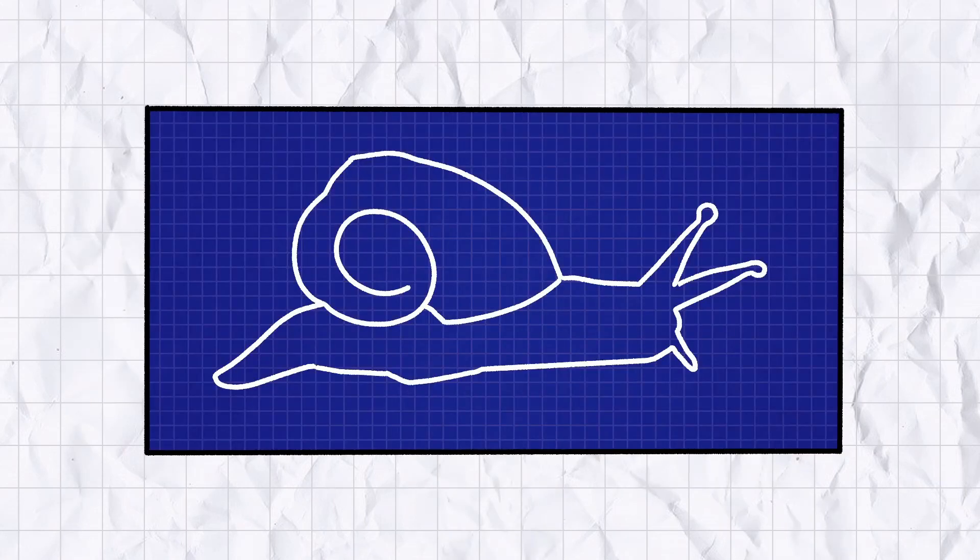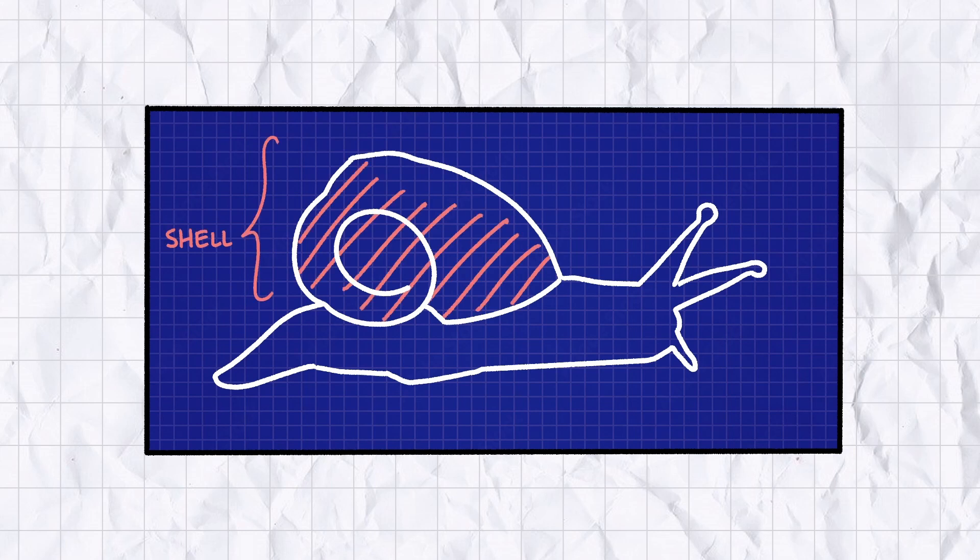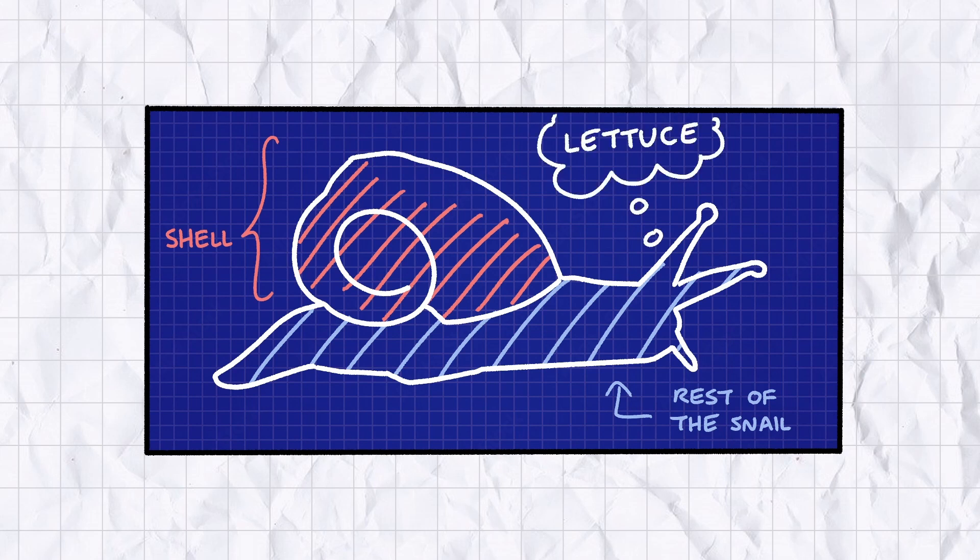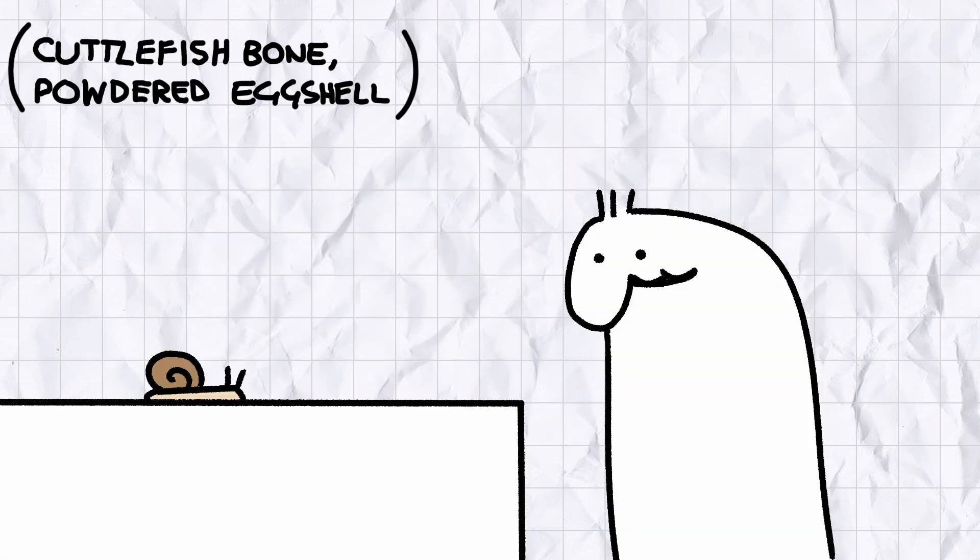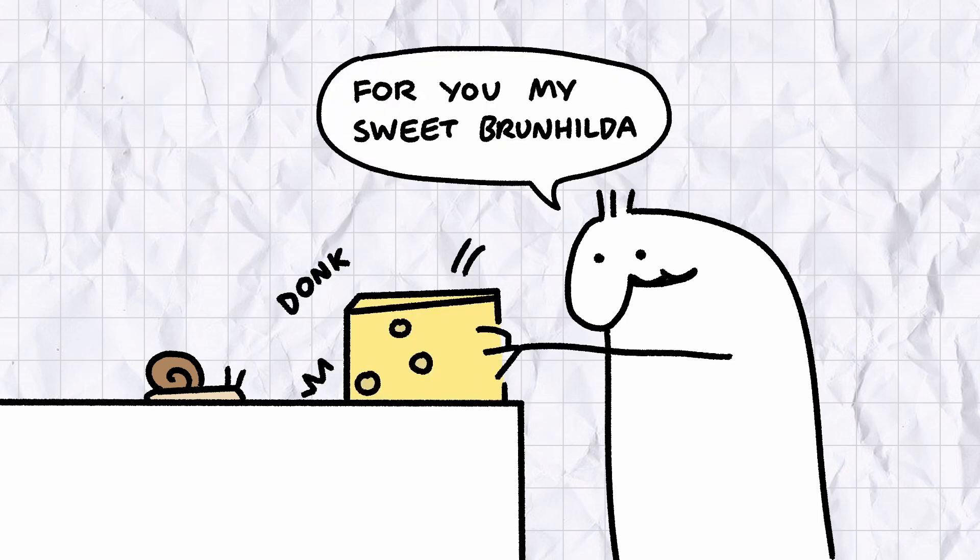Snails, for instance, can be roughly divided into two halves. The shell, made mostly of calcium carbonate, and the rest of the snail, largely made of proteins, water, and a never-ending hunger for lettuce and sweet potatoes. In fact, if you keep a snail as a pet, it's important you give them a source of calcium to munch on for healthy shell growth.